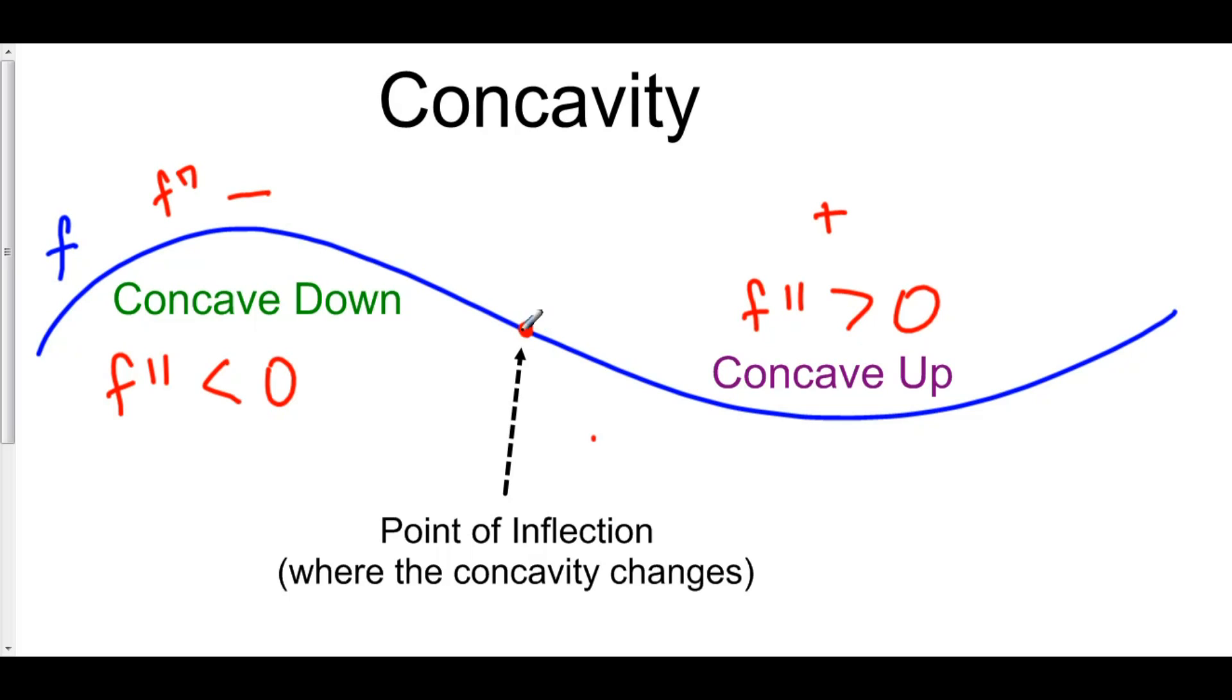Now, what is the second derivative at the point of inflection? Well, at the point of inflection, f double prime either equals zero or is undefined.